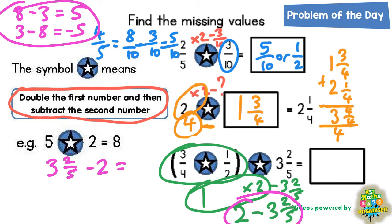Well 3 and 2 fifths take away 2 is going to be 1 whole 1 and 2 fifths. So if you switch it back round to the way that we actually want it, 2 take away 3 and 2 fifths is simply going to be minus 1 and 2 fifths. And that is our final answer. Negative 1 and 2 fifths.